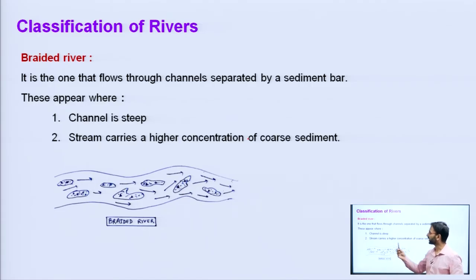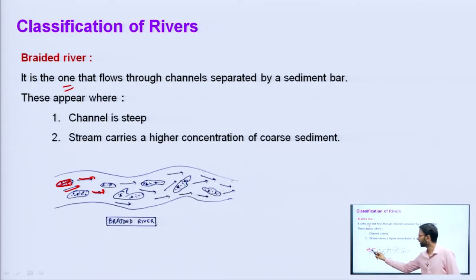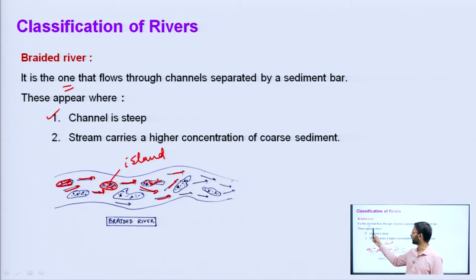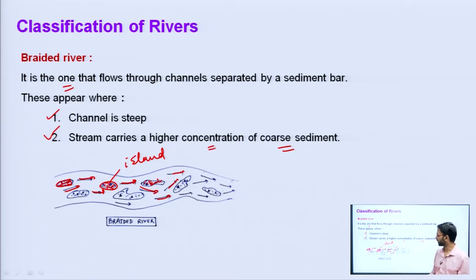The second type is the braided river. It flows through channels separated by a sediment bar. Sediment deposits form a type of island, causing an obstruction in the path of the water. Braided rivers appear where the channel is very steep and the stream carries a higher concentration of coarse sediment. The coarse, heavier sediment gets deposited in the stream itself, causing the water to change its path and flow around these deposits.